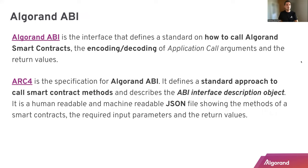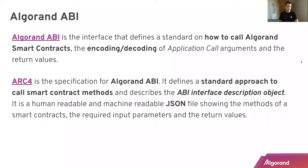So Algorand ABI is indeed an interface between a client application and the smart contracts in Algorand. Algorand ABI defines the way to code smart contracts and also defines the way for encoding and decoding application arguments and the return values we can get from a smart contract.